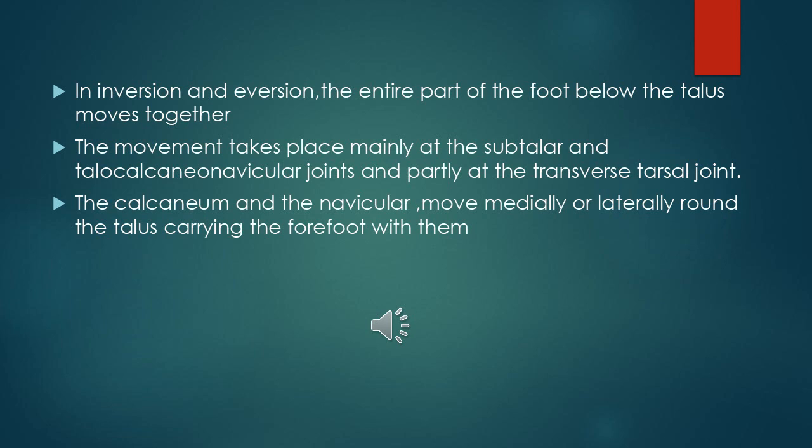In both inversion and eversion, the entire part of the foot below the talus moves together. The movements take place mainly at the subtalar and talo-calcaneo-navicular joint, and partially at the transverse tarsal joints. The calcaneum and the navicular bone move medially or laterally around the talus, carrying the forefoot with them.